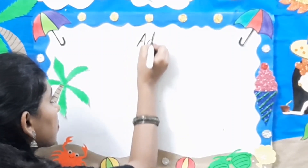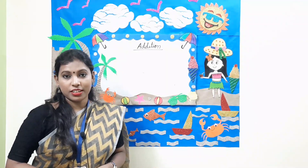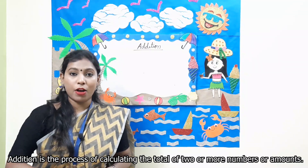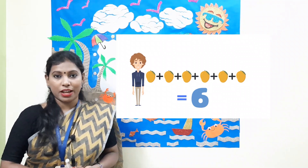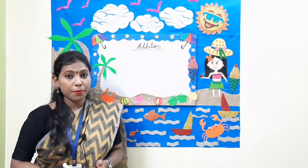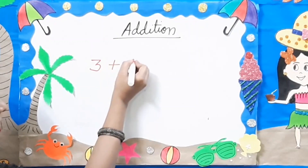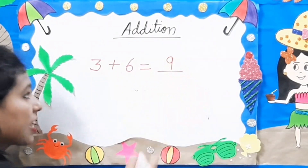Now we will go to our next topic, that is Addition. What is Addition? It is the process of calculating the total of 2 or more numbers or amounts. For example, you bought 3 mangoes and your mother gave you 3 more. So what is the total number of mangoes you have? You have a total of 6 mangoes. Now you have to find the sum of 3 and 6. You will write down 3 plus 6 is equal to 9. So the answer is 9.